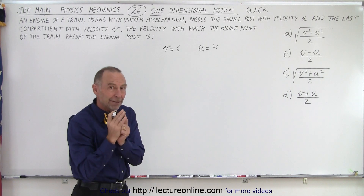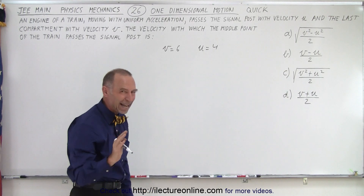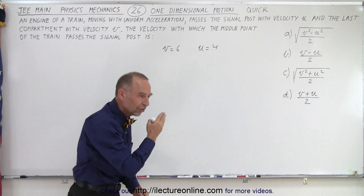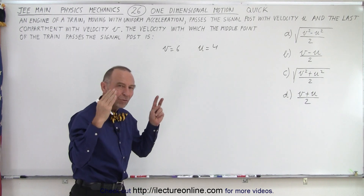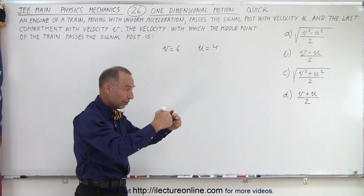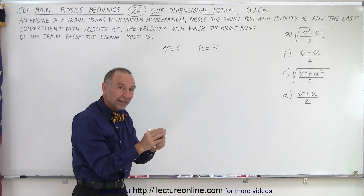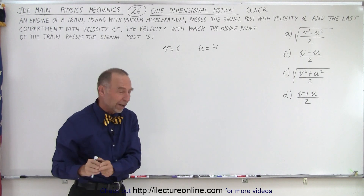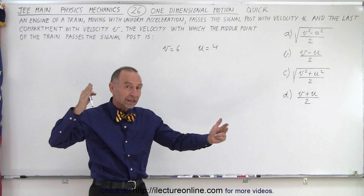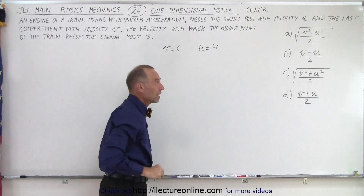We would expect the velocity of the middle of the train to be somewhere between four and six — actually a little bit closer to six than to four. Because since the train is accelerating, it takes more time for the front of the train to pass the post and then the middle to pass the post than to go from the middle to the end. So we expect the velocity closer to six than to four for the middle of the train.